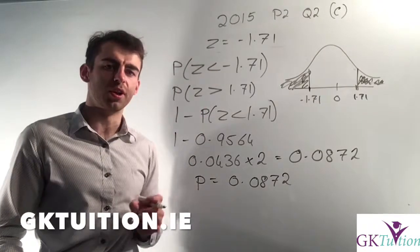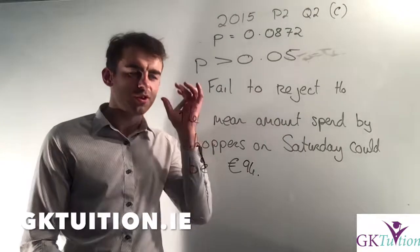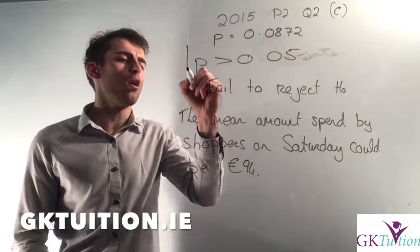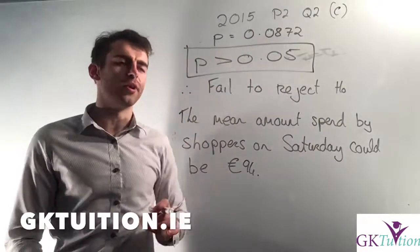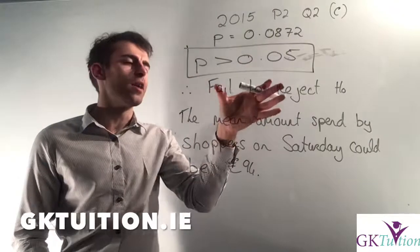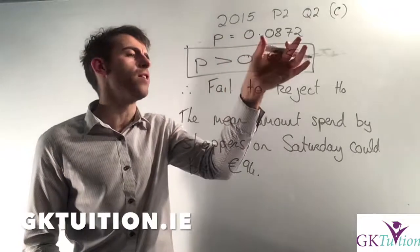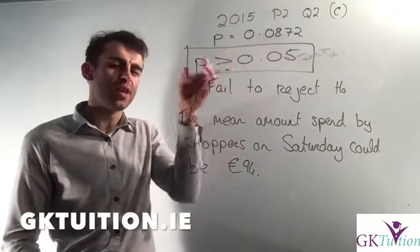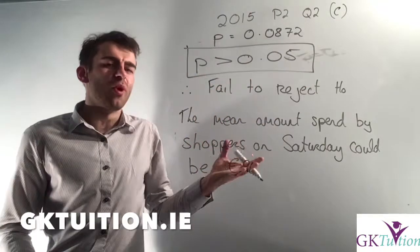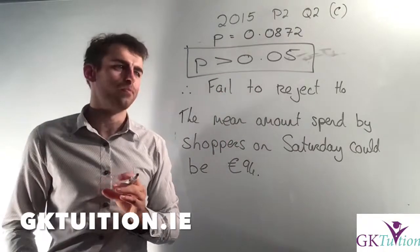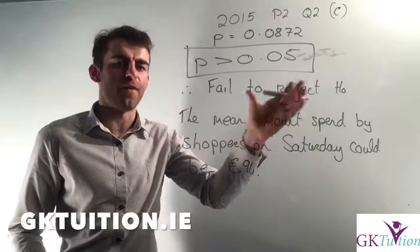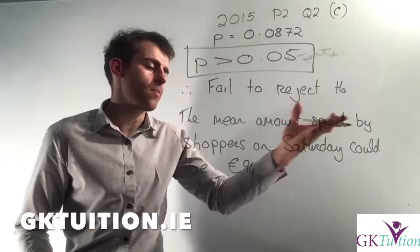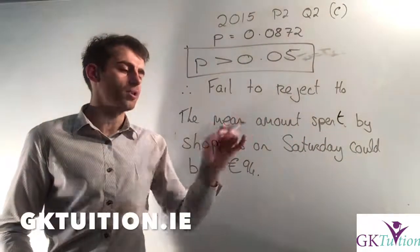I always tell my students to go for overkill when concluding these statistics questions. I've worked out that my p-value is 0.0872. You should always refer to this when concluding. Because p is greater than 0.05, that means I fail to reject H₀. In other words, because more than 5% of the figures are more extreme than my z-score, I'm going to fail to reject H₀, because that means it's within my 95% confidence interval. If your p-value is greater than 0.05, you fail to reject H₀; if less than 0.05, you reject H₀. So I've failed to reject H₀ — the mean amount spent by shoppers on Saturday could be €94.